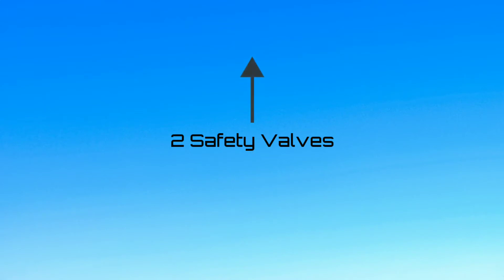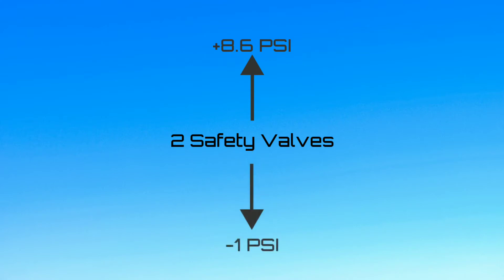Two independent pneumatic safety valves prevent cabin pressure from going too high — 8.6 PSI above ambient — or too low — 1 PSI below ambient. They are located on the rear pressure bulkhead, above the flotation line.